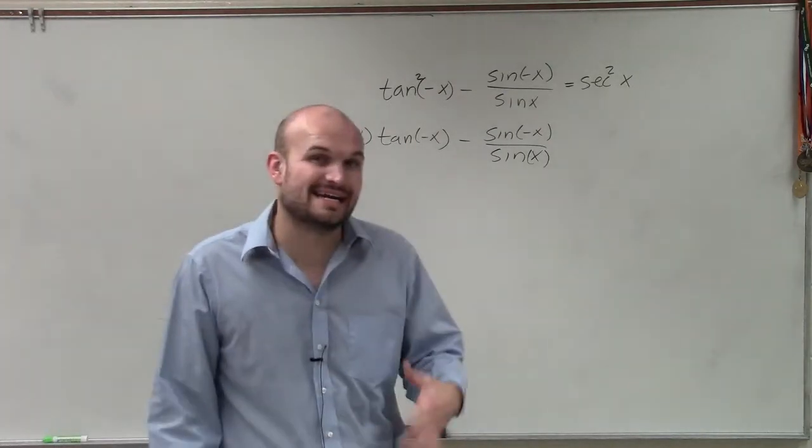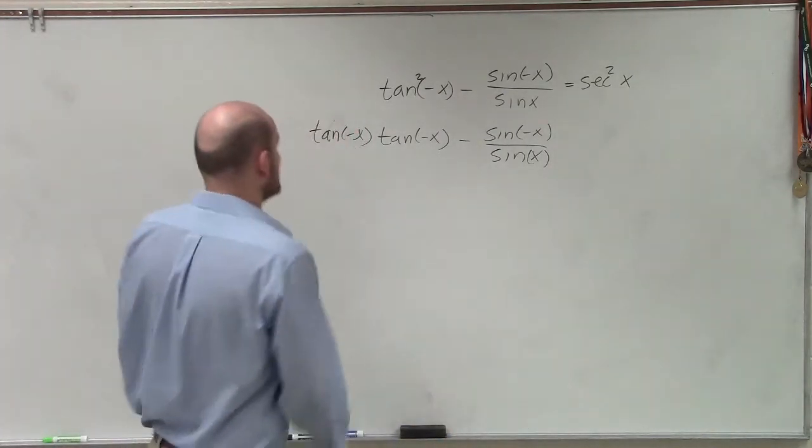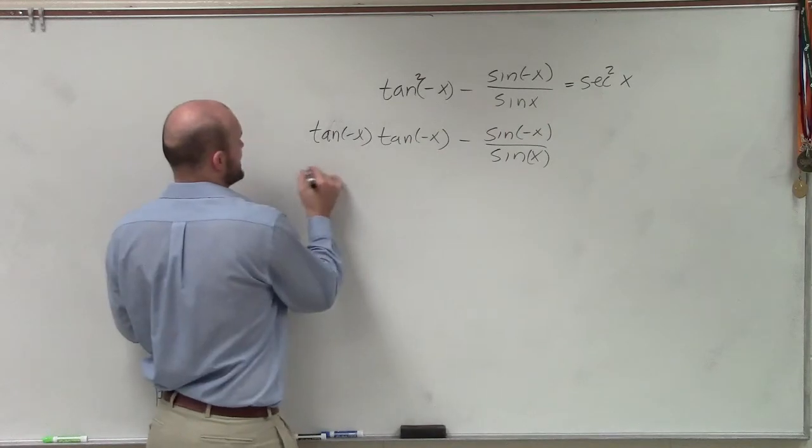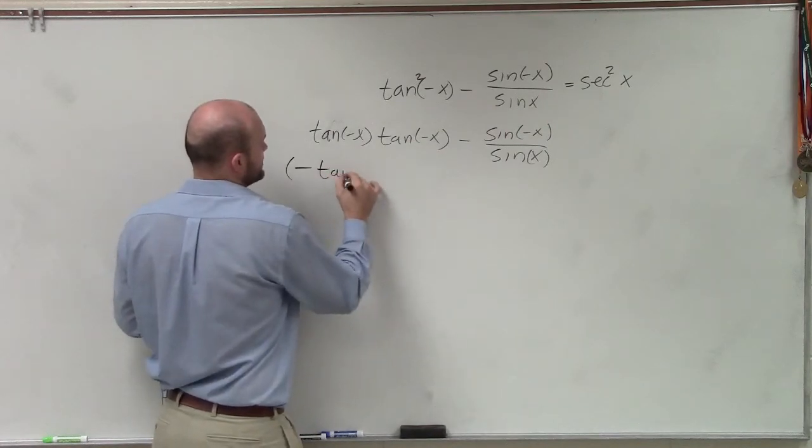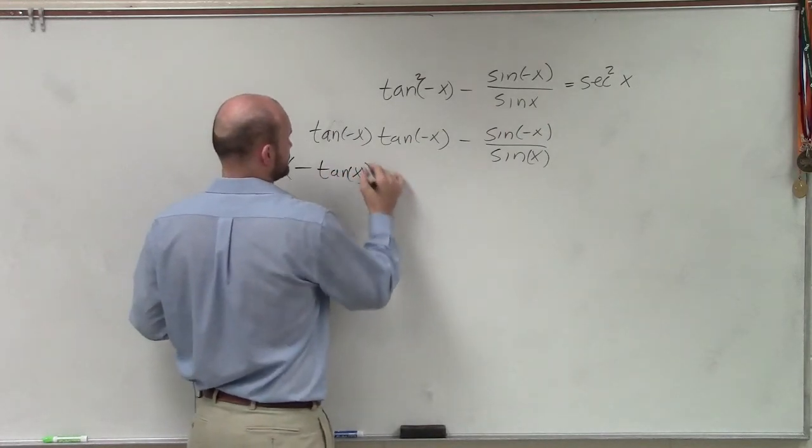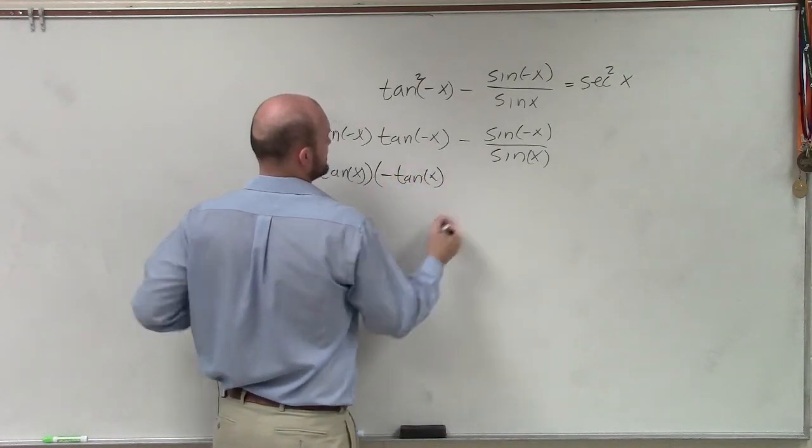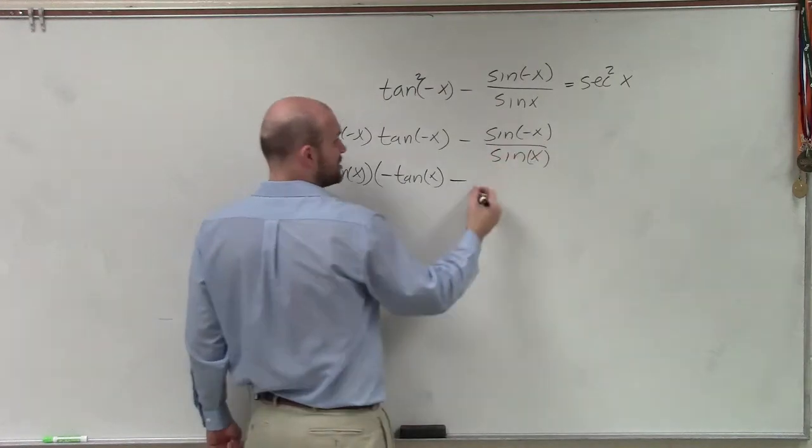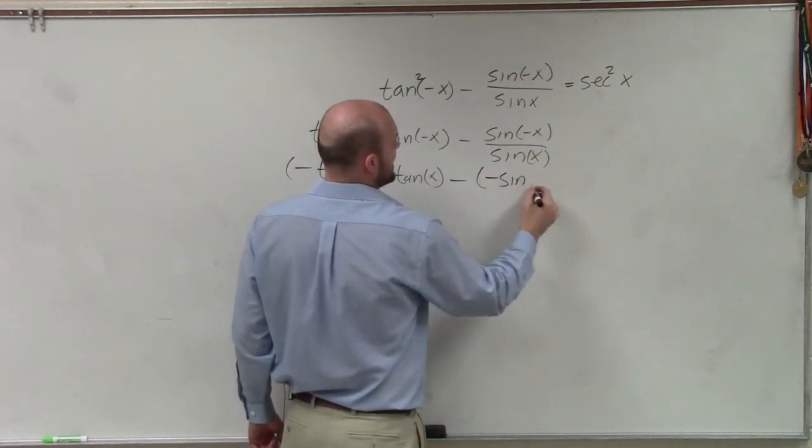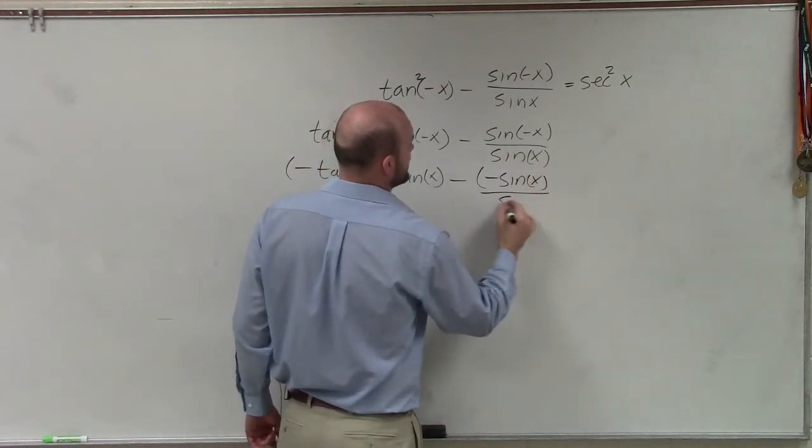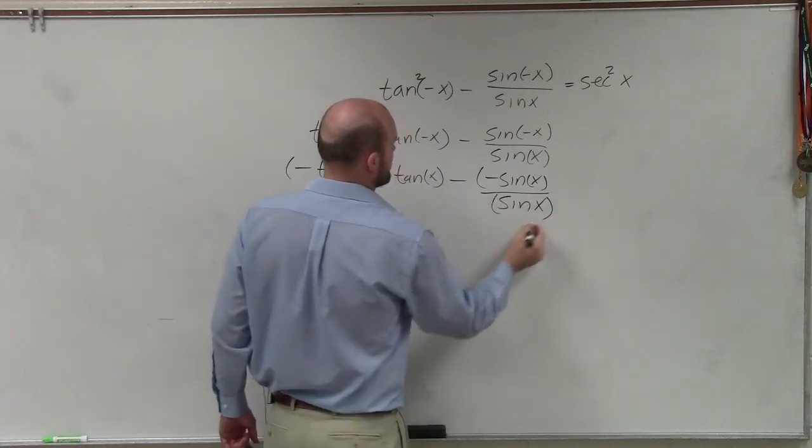Because tangent as well as sine are odd functions. Therefore, the tangent of negative x is now equal to a negative tangent of x times a negative tangent of x. And then that's going to be minus. Sine is also a negative, so it's going to be sine of x divided by sine of x.